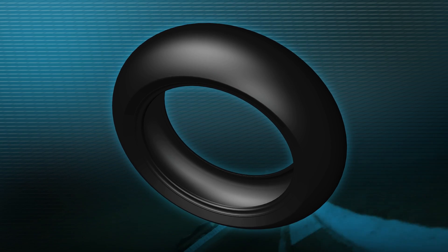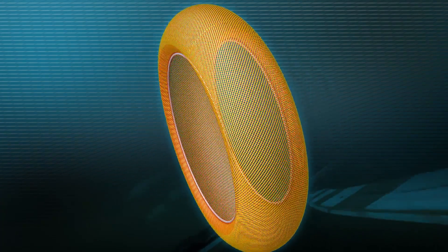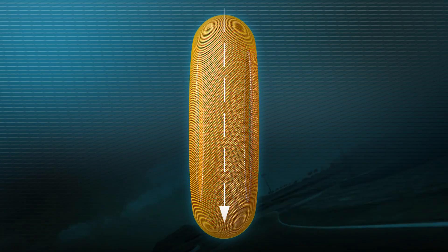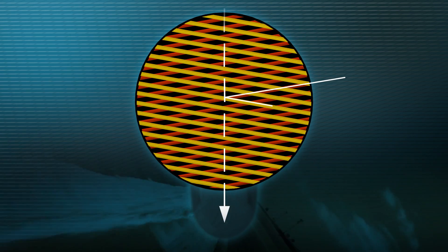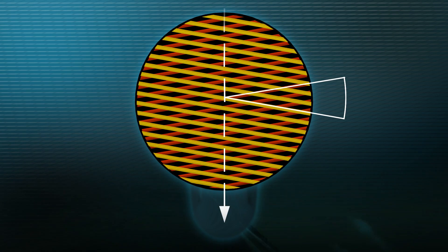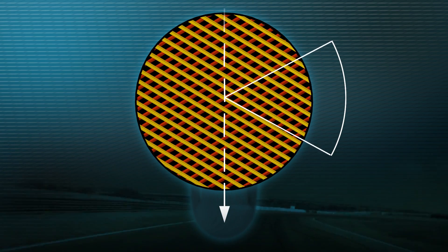The casing of a motorbike tyre comprises two cord plies laid on top of each other. The degree of stiffness varies as a function of the angle at which these plies are overlaid. The bigger the angle, the more rigid the casing.